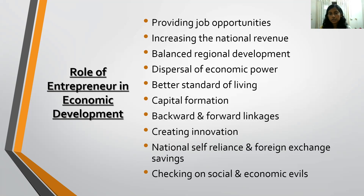The next point is backward and forward linkages. For example, suppose you are in the textile business and your suppliers are charging unreasonable rates for raw materials. Once you have established your business, you might think of starting another unit that manufactures the raw materials required — this is called backward linkage. When a cotton manufacturer sets up a unit to process the cotton into clothes, that creates a backward linkage.